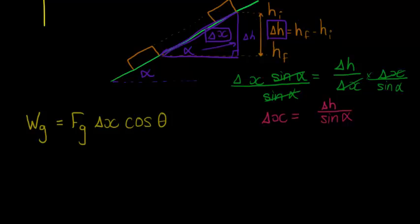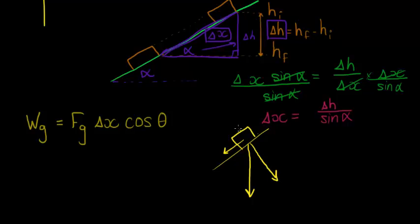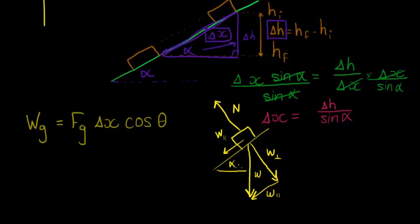The gravitational force acts downward. For an object on an incline, this gravitational force can be broken into two components: one perpendicular to the surface, which cancels with the normal force, and one parallel to the surface. It's the component parallel to the surface that I'm interested in, because that is the one doing work along the direction of displacement.